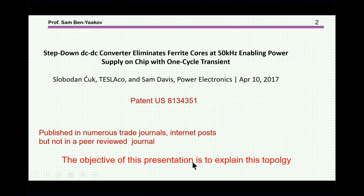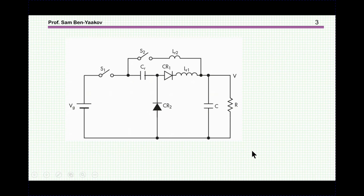So the objective of this presentation is really to explain this topology, how it works, and what's behind it. The topology of this converter consists of two switches at the input that work one at a time, a resonant capacitor, two resonant inductors, two diodes. This is the output section with filter and load.